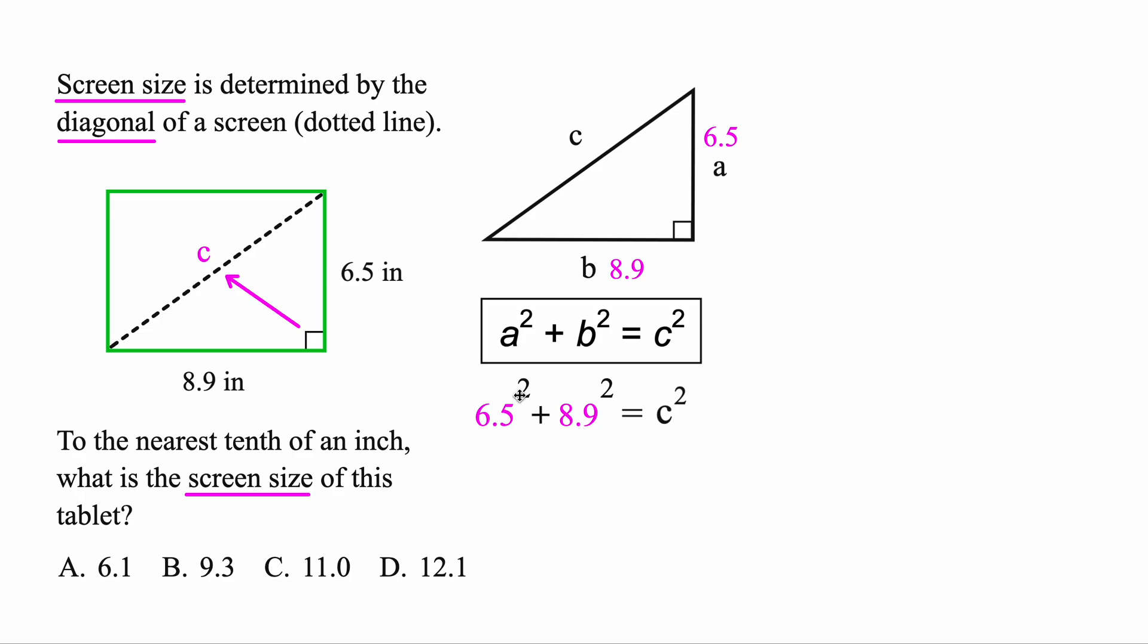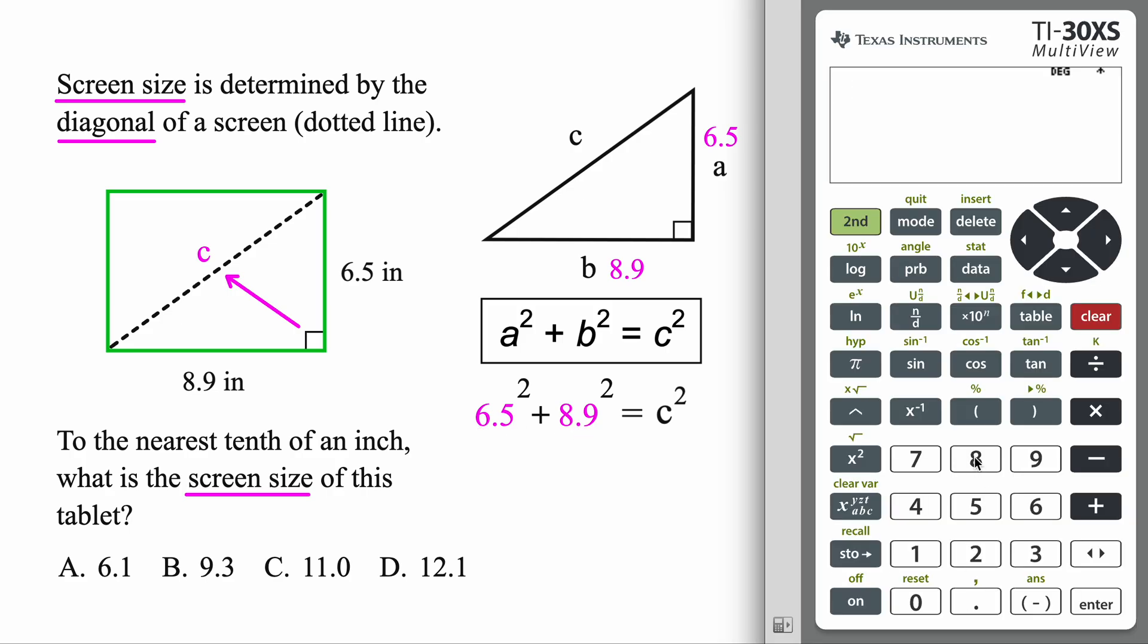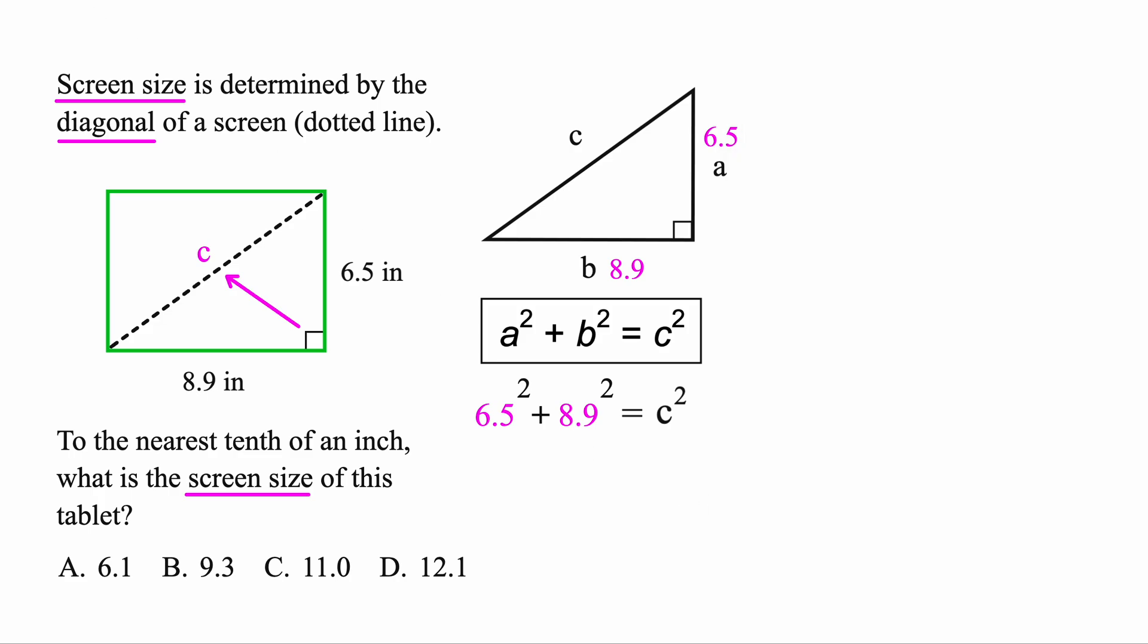This is exactly like the first problem that we did. We could square these individually, add them together, or just do it all as one step. Let's go ahead and do that. 6.5 squared plus 8.9 squared. 121.46. Let's add that in. So that's C squared. Last step, we know we're going to go ahead and do our square root. And over here, get those guys to cancel. So C, that's going to be the square root of this guy.